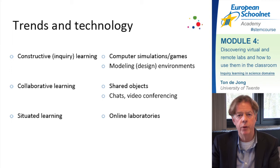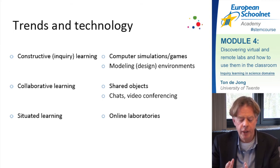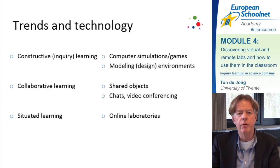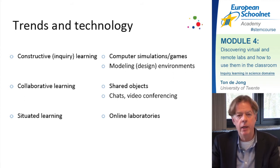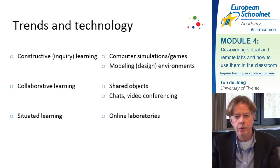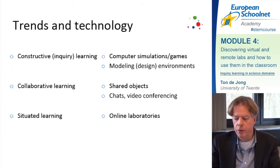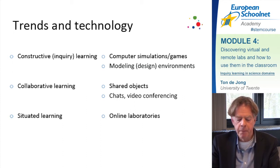These three characteristics together are related to different forms of instruction, as you see on the next slide. Inquiry learning is related to the individual aspect of knowledge; collaborative learning is related to the social aspect; and learning in real context — situational learning — is related to the contextual aspect. So we have three forms of learning that are related to characteristics of knowledge that we have started to value nowadays.